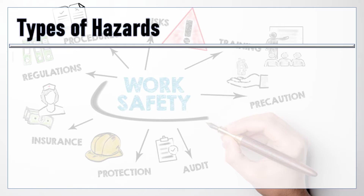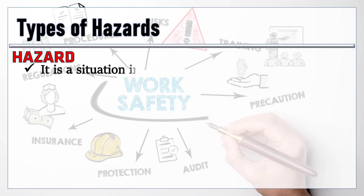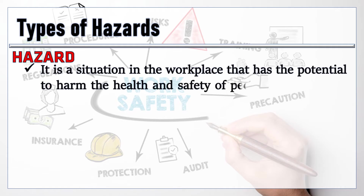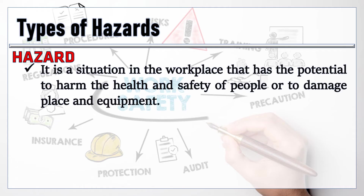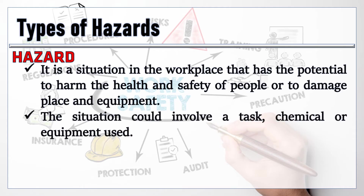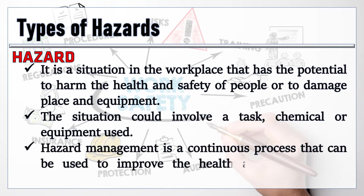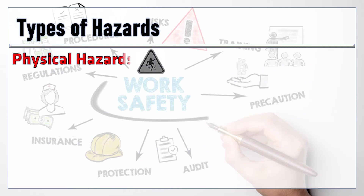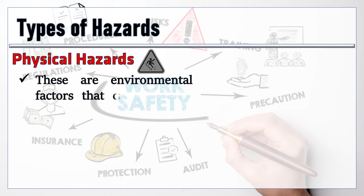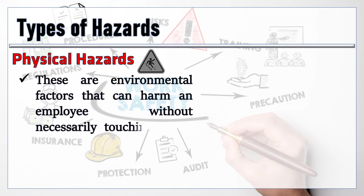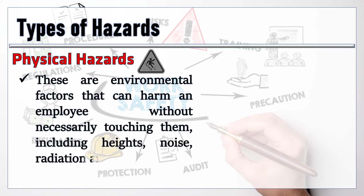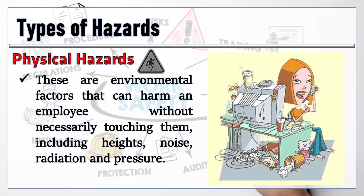There are four types of hazards. A hazard is a situation in the workplace that has the potential to harm the health and safety of people or to damage place and equipment. The situation could involve a task, chemical or equipment use. Management is a continuous process that can be used to improve the health and safety of all workplaces. The first type is physical hazards — environmental factors that can harm an employee without necessarily touching them, including heights, noise, radiation and pressure.